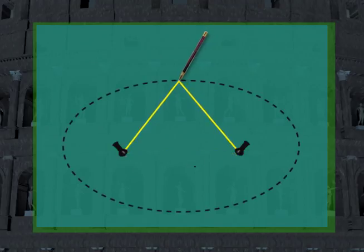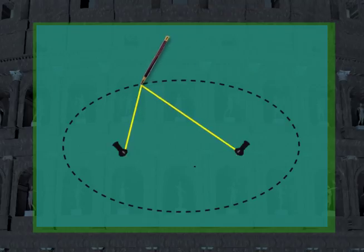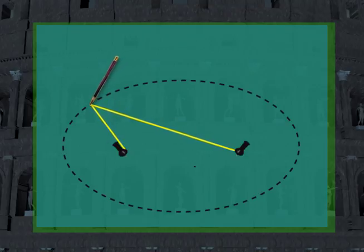Take the pencil and extend the string so that you end up with a triangular shape as shown. These two sides of the triangle represent the distances to the foci from the vertex of the triangle. This vertex is a point on the ellipse. Keep the string taut and move the pencil to different locations, in the process constructing the ellipse.